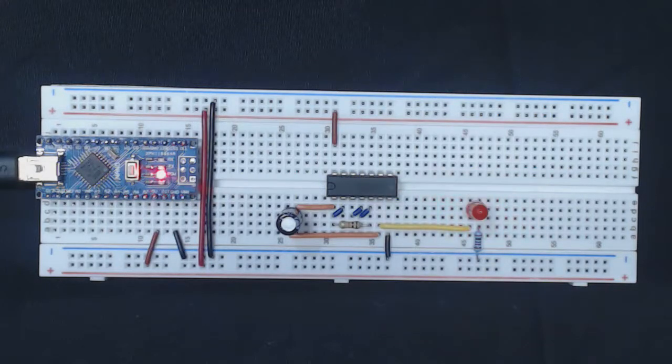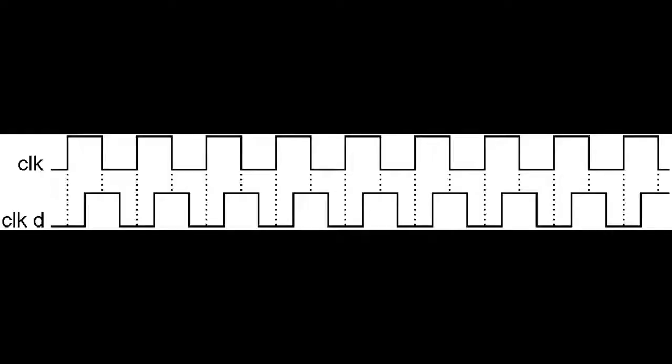That in the book is called clock D which has to be delayed a quarter of a cycle compared to this first clock. So let's see how we can do that.